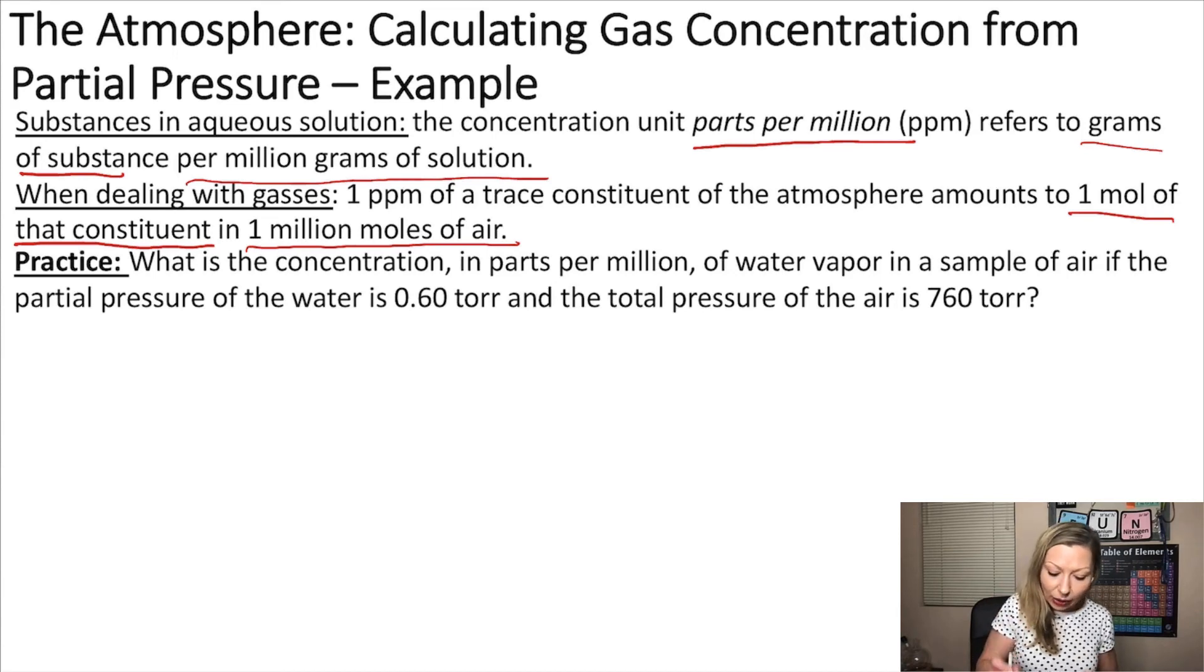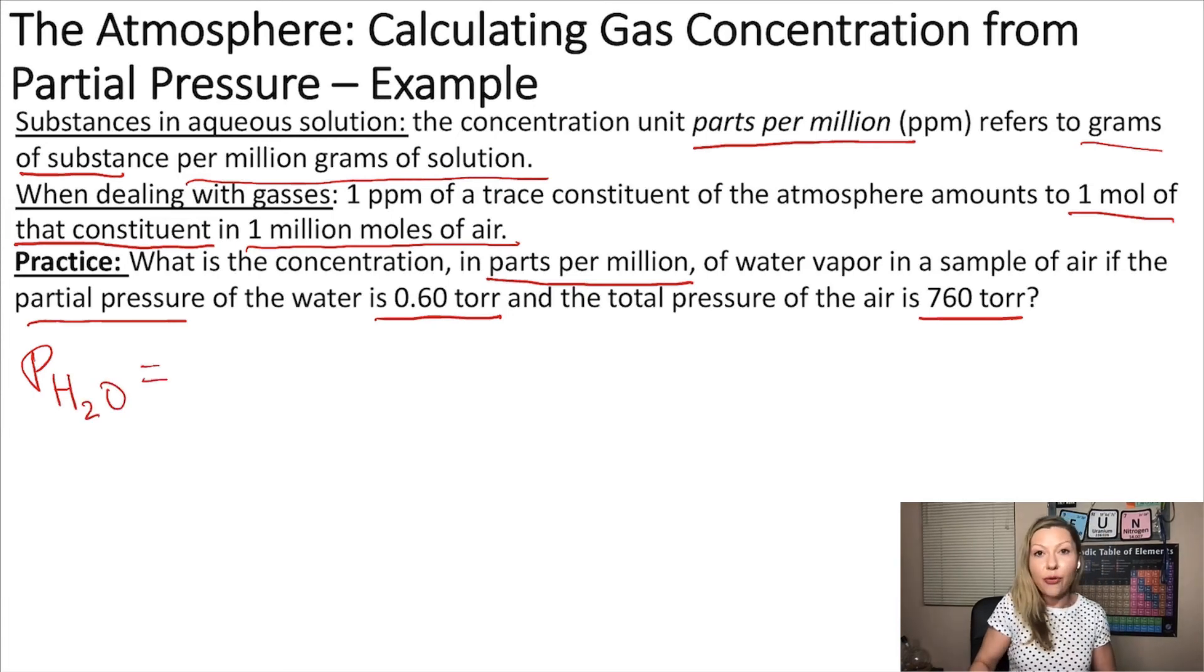Let's calculate the concentration in ppm of water vapor in a sample of air. The partial pressure of water is 0.60 torr and the total pressure of air is 760 torr. We can calculate the partial pressure of gas using pH2O equals the mole fraction chi H2O multiplied by the total pressure.